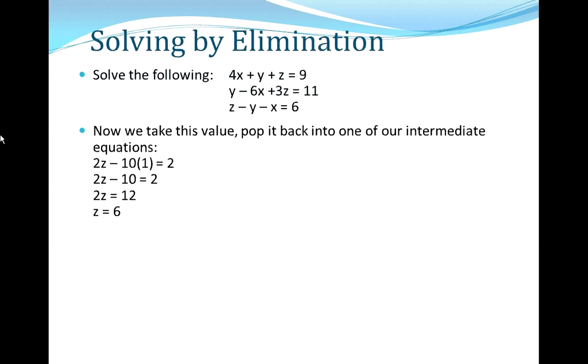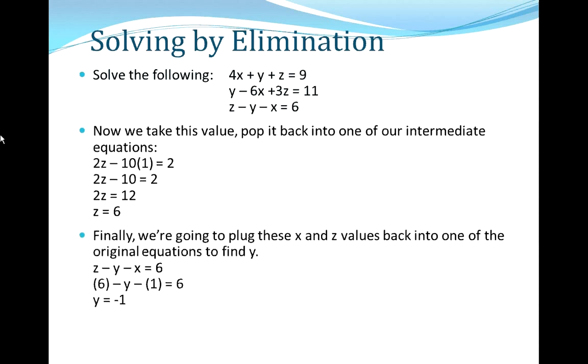Our final step, of course, is to find y. To do this, we can plug the x and z values back into either of the original equations, the three equations at the top, to find y. In this case, I've picked what I thought was the simplest equation, which is equation 3. Really, it doesn't matter which one you put the x and z values back into, any of them would work. So I've plugged 6 in for z, and 1 in for x, and that has resulted in an equation 6 minus y minus 1 equals 6. So that results in a value of y of negative 1 when you complete the algebra.